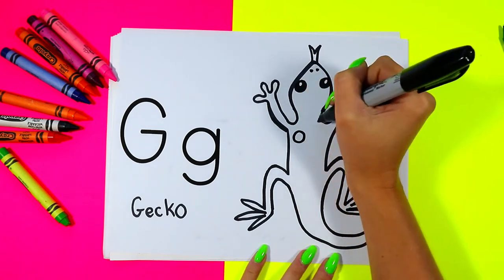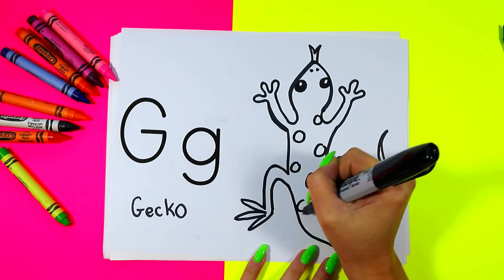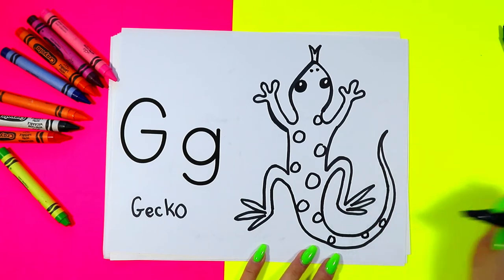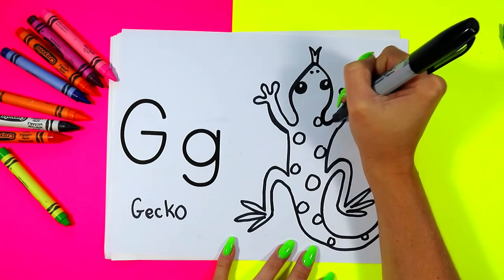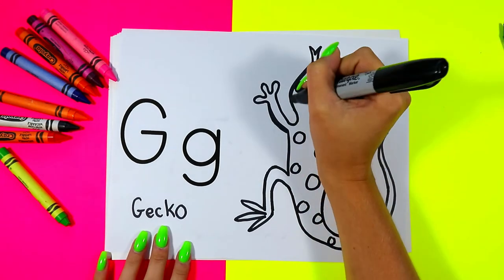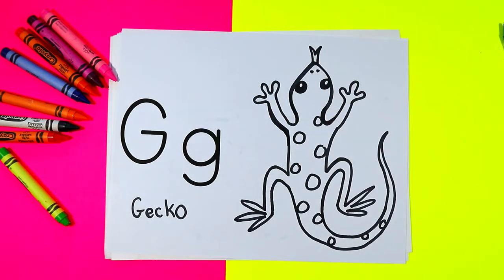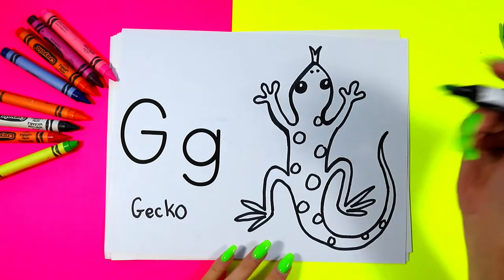Next we're going to add some spots on our gecko's body — draw circles down your gecko's body to create some spots. And once you're done you are ready to color in your lovely little gecko. Grab whatever colors you want and your choice of art making mediums.